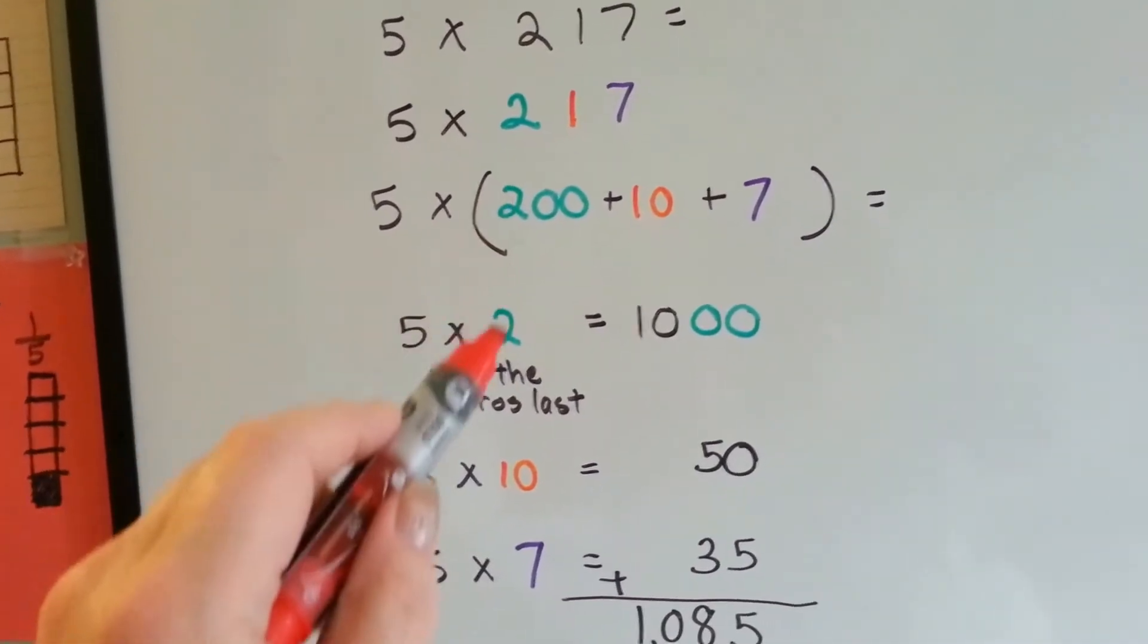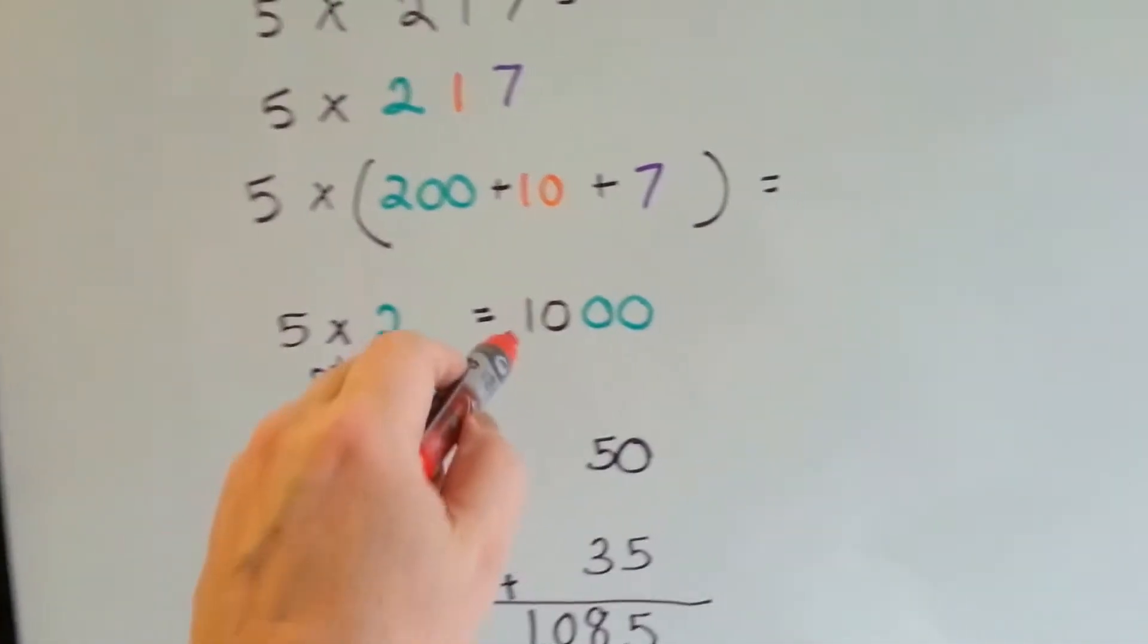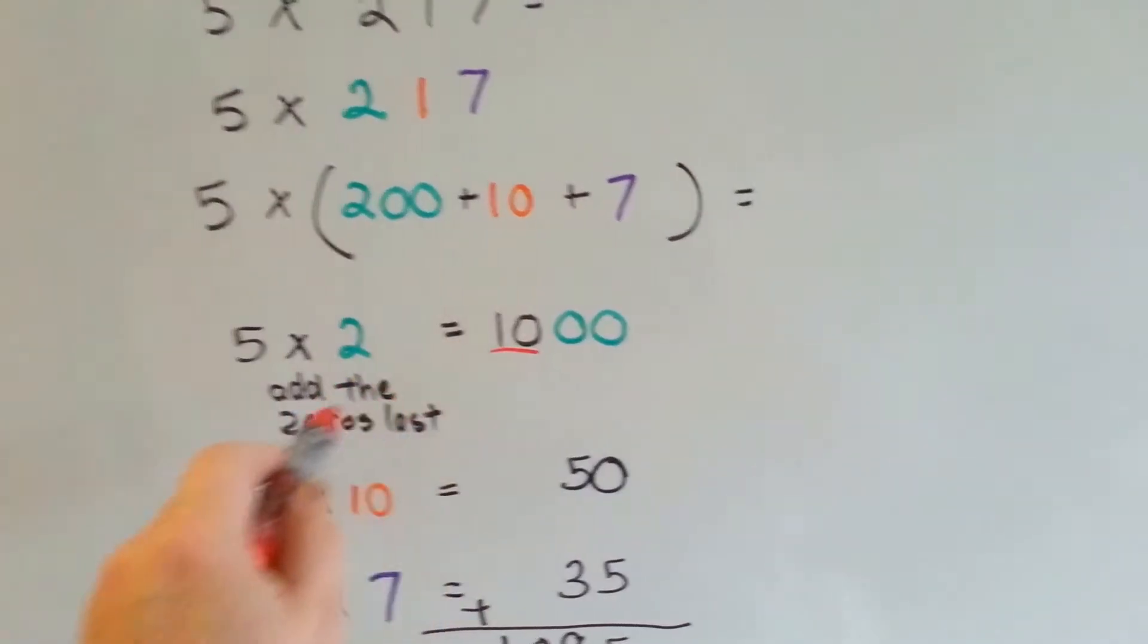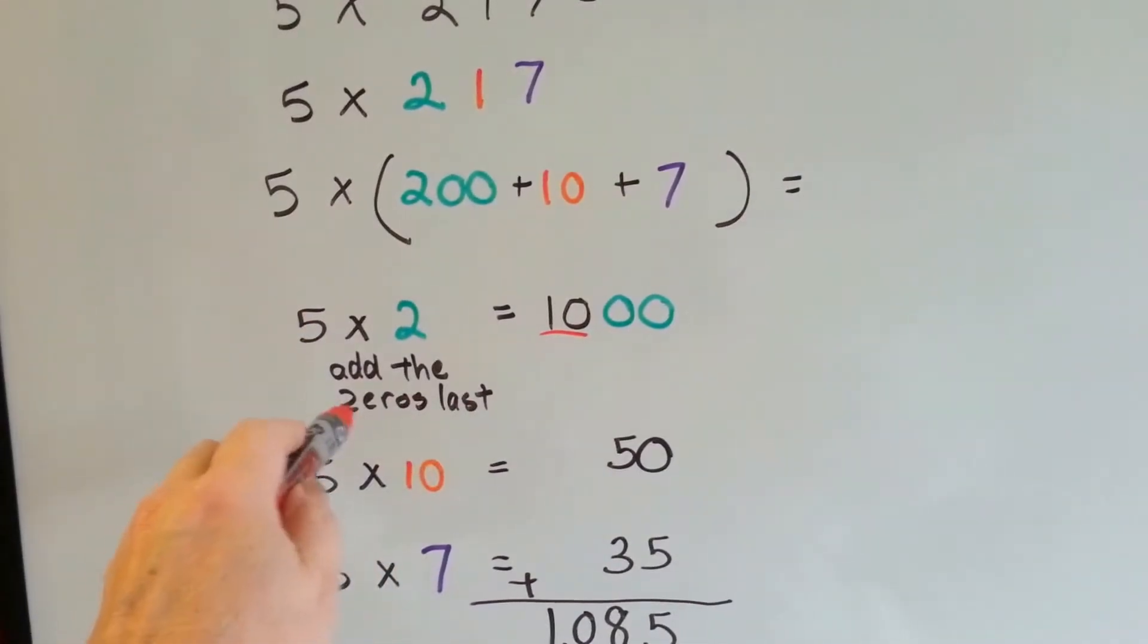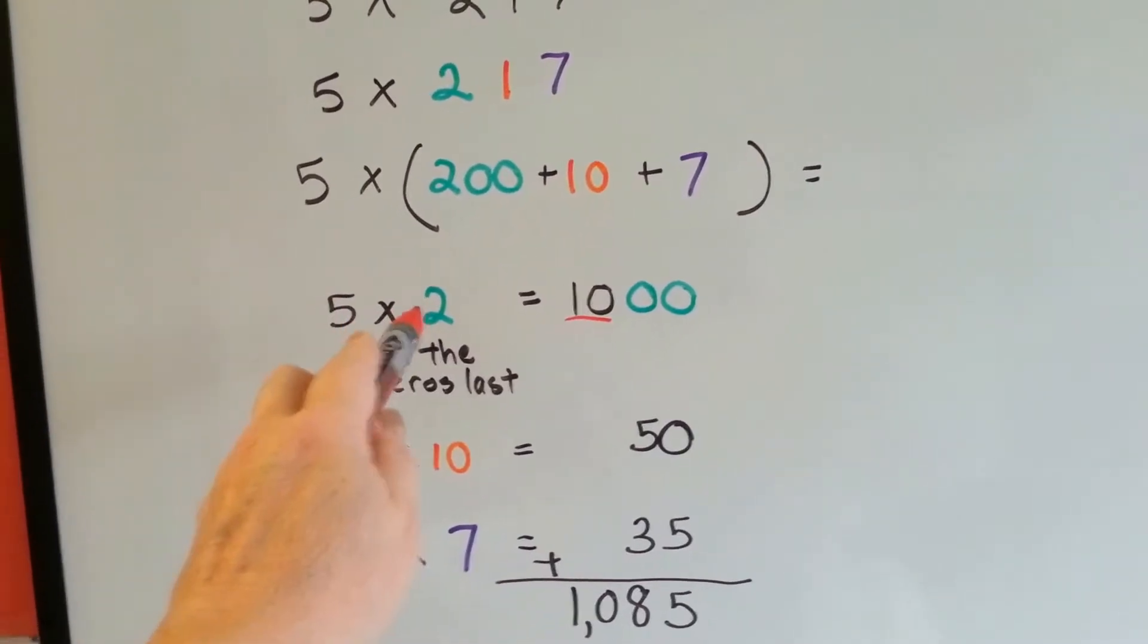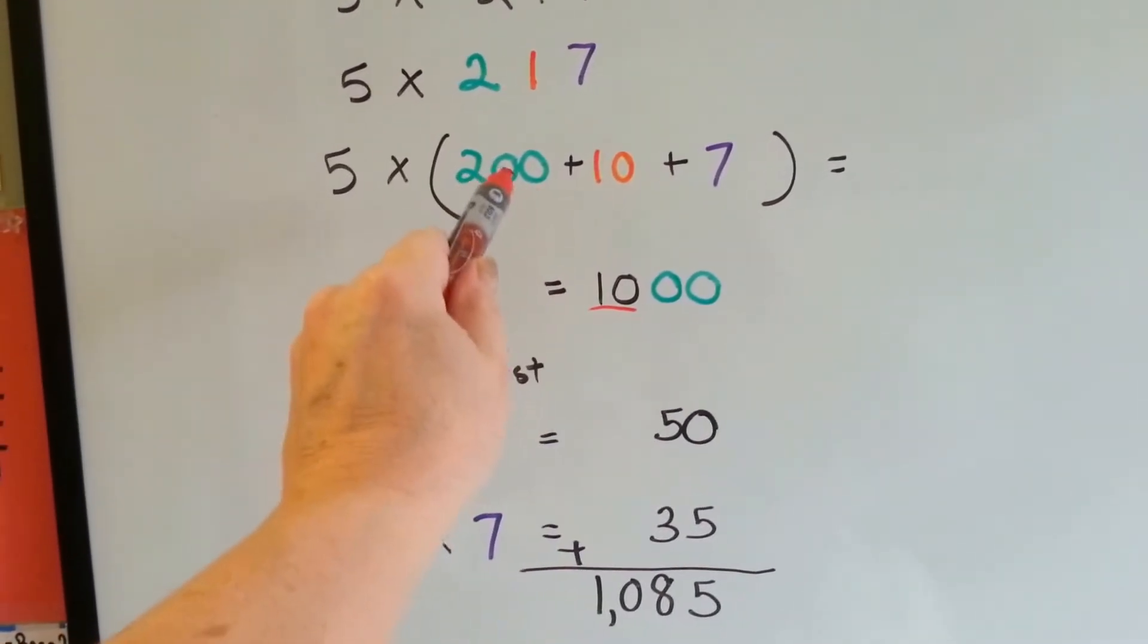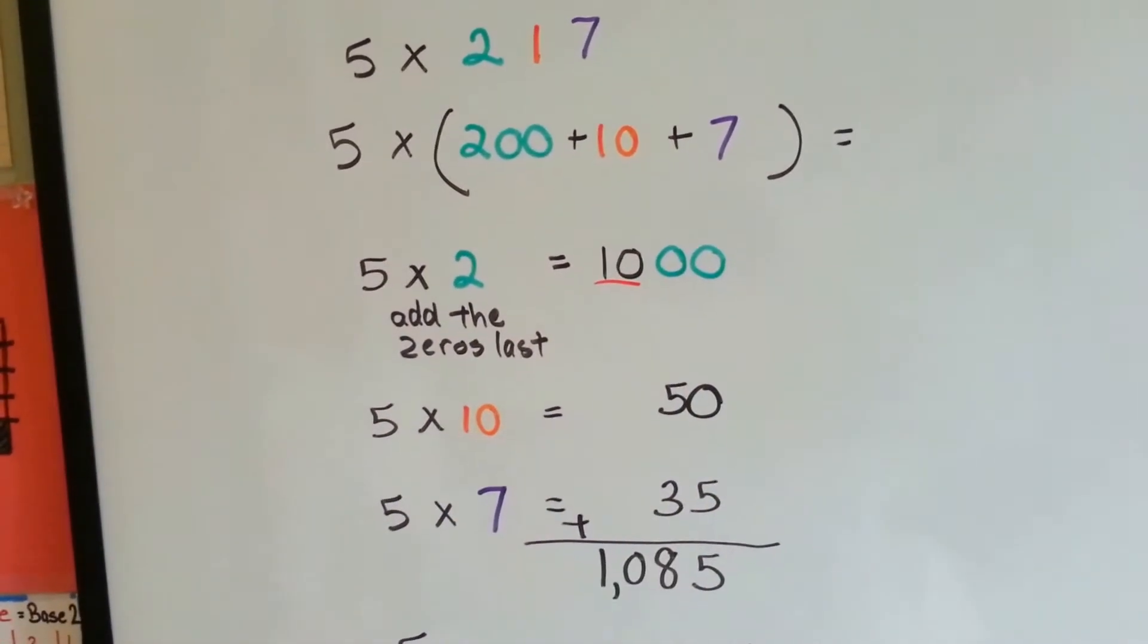5 times 2 is 10. See the 10 right here? And then we add the two zeros afterwards. So 5 times 2 is 10, and then we put the two zeros from the 200 on, and we get a thousand.